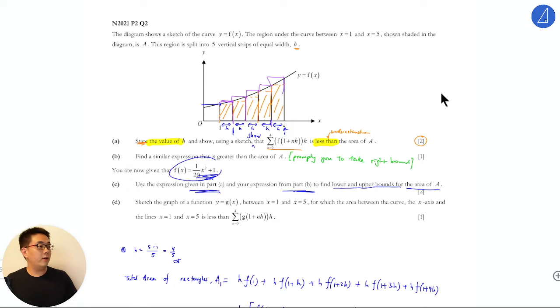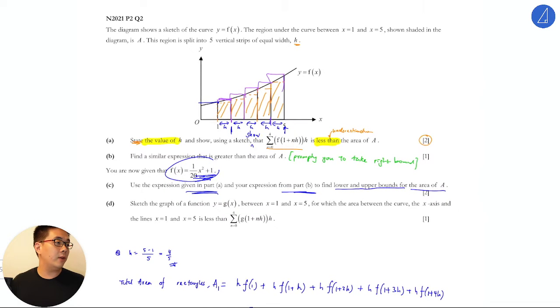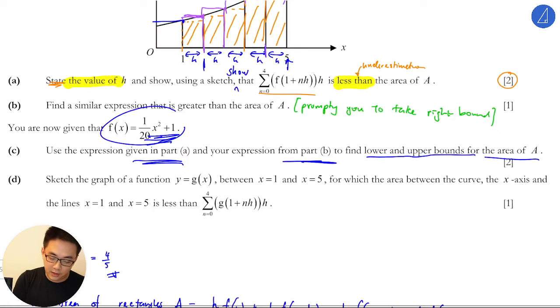Guys, sketch the graph of a function y equal to g(x) between x=1 to x=5 which the area of the curve, x-axis in the - this is one. Now what does it mean? What they're trying to say, can you understand what they're trying to say? You see there's another function here.